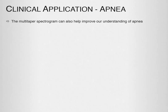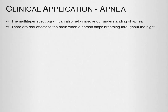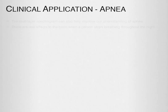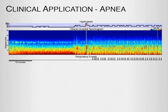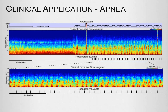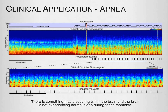The multi-taper spectrogram can also help improve our understanding of apnea. Apnea is thought primarily as an autonomic condition affecting a person's heart as they fall asleep. However, there are real effects to the brain when a person stops breathing throughout the night. Here is an example of a subject who continuously stopped breathing over the course of the night — we observed bursts of activity as they fell asleep and were woken up from not breathing. This shows that apnea is not just an impact on a person's physiological system, but something occurring within the brain, and the brain is not experiencing normal sleep during these moments — a concept that has been mentioned but not fully explored yet.